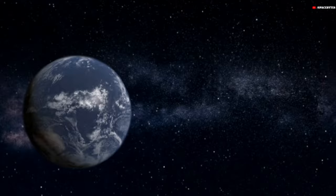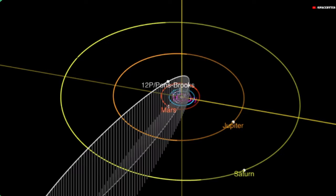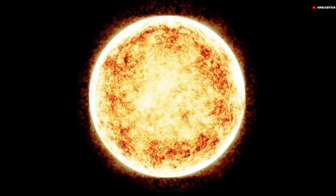The comet will pass closest to the sun around April 21, then will pass closest to Earth around June 2. It may be visible when it is closer to the sun.